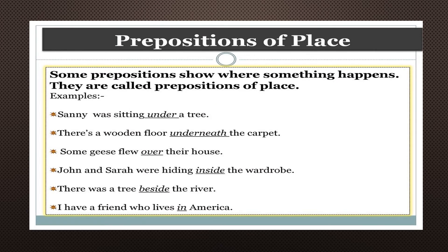Coming to prepositions of place. Some prepositions show where something happens; they are called prepositions of place. Sunny was sitting under a tree — where was Sunny sitting? Under a tree. There is a wooden floor underneath the carpet. Some geese flew over their house. I have a friend who lives in America. There was a tree beside the river. John and Sarah were hiding inside the wardrobe.